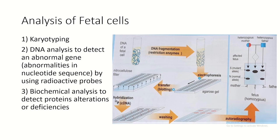When we have the fetal sample, we can do karyotyping, biochemical analysis to detect protein alterations or deficiencies, or DNA analysis. For DNA analysis, we take fetal DNA, fragment it using restriction enzymes, run the fragments on gel electrophoresis, add a probe to detect certain genes, and get a pattern showing whether the individual is homozygous normal, heterozygous, or homozygous abnormal.